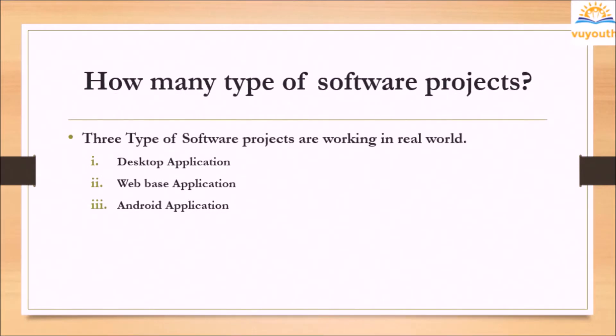How many types of software projects are there? Three types of software projects are working in the real world. One: desktop application. Two: web-based application. Three: Android application.